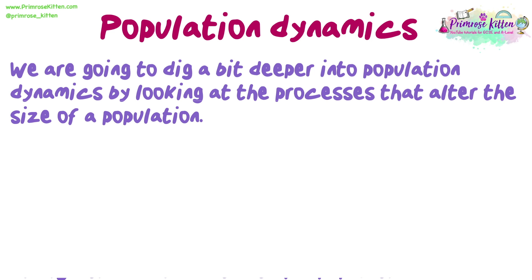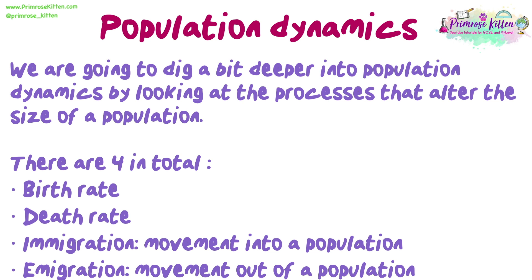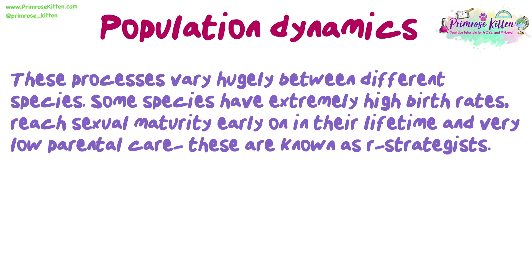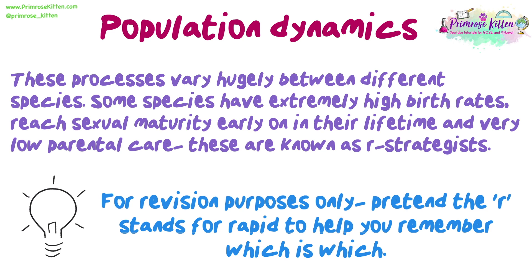We are going to dig a bit deeper into population dynamics by looking at the four processes that alter the size of a population: birth rate, death rate, immigration (movement into a population), and emigration (movement out of a population). These processes vary hugely between different species. Some species have extremely high birth rates, reach sexual maturity early in their lifetime, and have very low parental care — these are known as R-strategists. For revision purposes, pretend the R stands for 'rapid' to help you remember which is which.